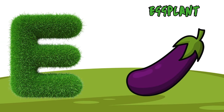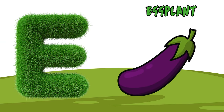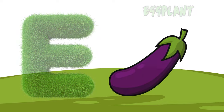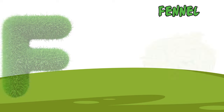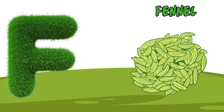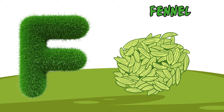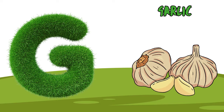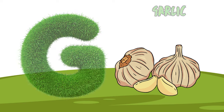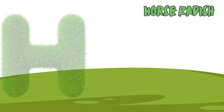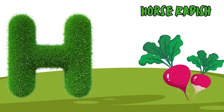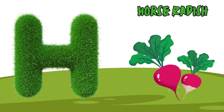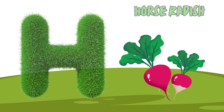E is for eggplant, eggplant. F is for fennel, f-f-fennel. G is for garlic, g-g-garlic. H is for horseradish, h-h-h-horseradish.